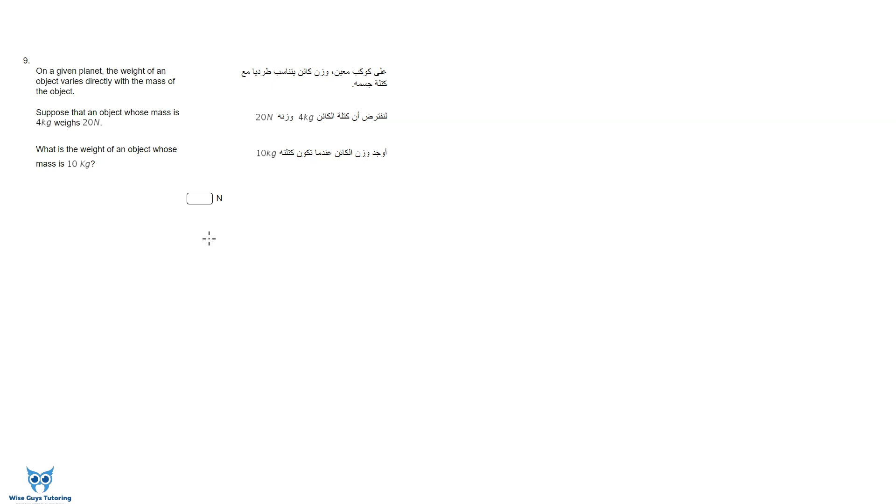So the simplest way to do this would be to set up a proportion like this. I'm gonna put the masses on top, for example something that's 4 kilograms weighs 20 Newtons. So I'm putting the masses on top and the weights on the bottom. Now they're asking me what is the weight, so I don't know this weight, we'll call it x Newtons of an object whose mass is 10 kg.